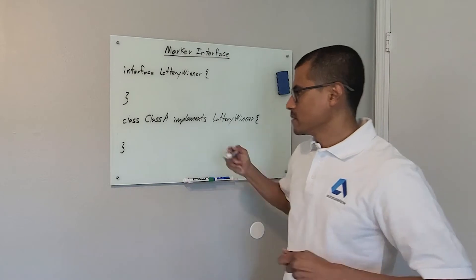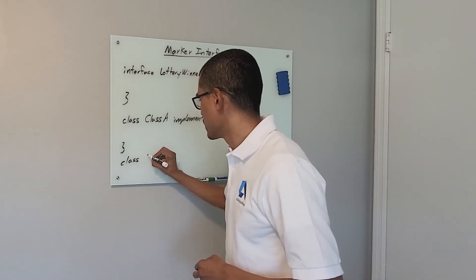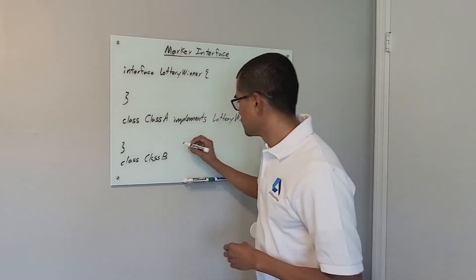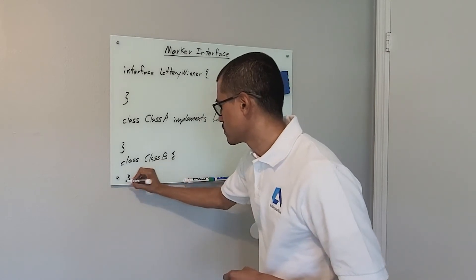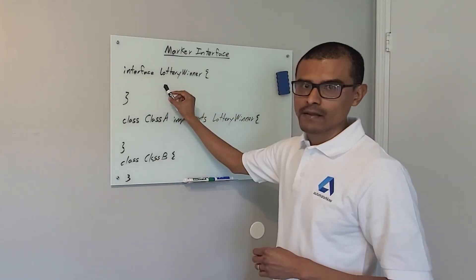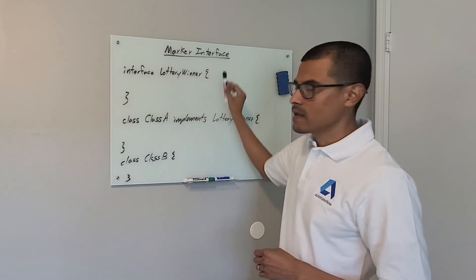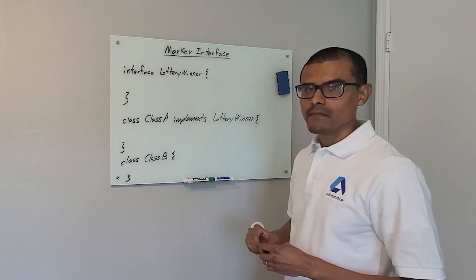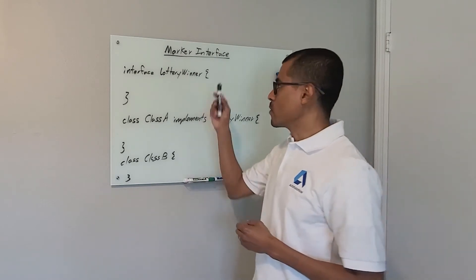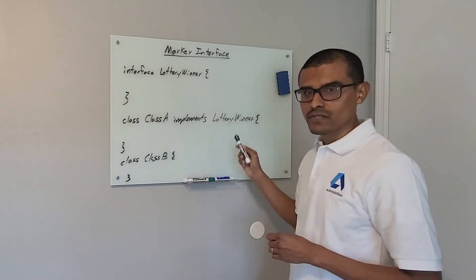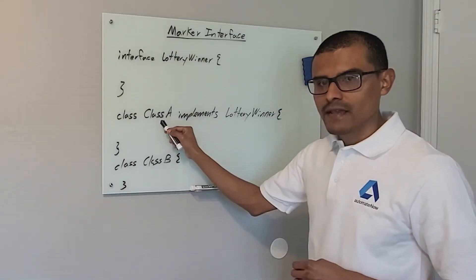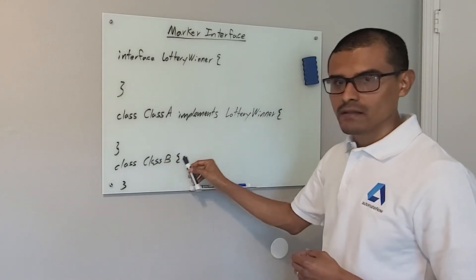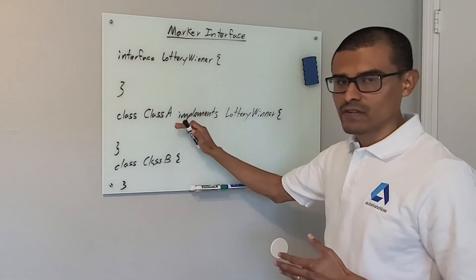Let's define one other class — we're going to say class B. This class will not implement that interface. So here we have an interface that contains no body. This is known as a marker interface. Then we have class A which implements that marker interface, and class B which does not. Why would we want to do this? The main reason for using marker interfaces is to give classes that implement those interfaces special privileges. Class A will have special privileges because it implements the Lottery Winner interface, whereas class B does not implement that interface and will not have the same privileges.